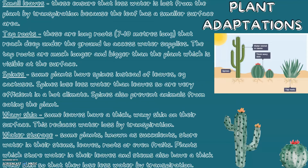Now let's look at plant adaptations. Plants tend to have small leaves, which ensure that less water is lost by transpiration because the leaf has a smaller surface area. They also have tap roots — long roots 7 to 10 meters long that reach deep underground to access the water supply. These tap roots are much longer and bigger than the part of the plant visible at the surface.